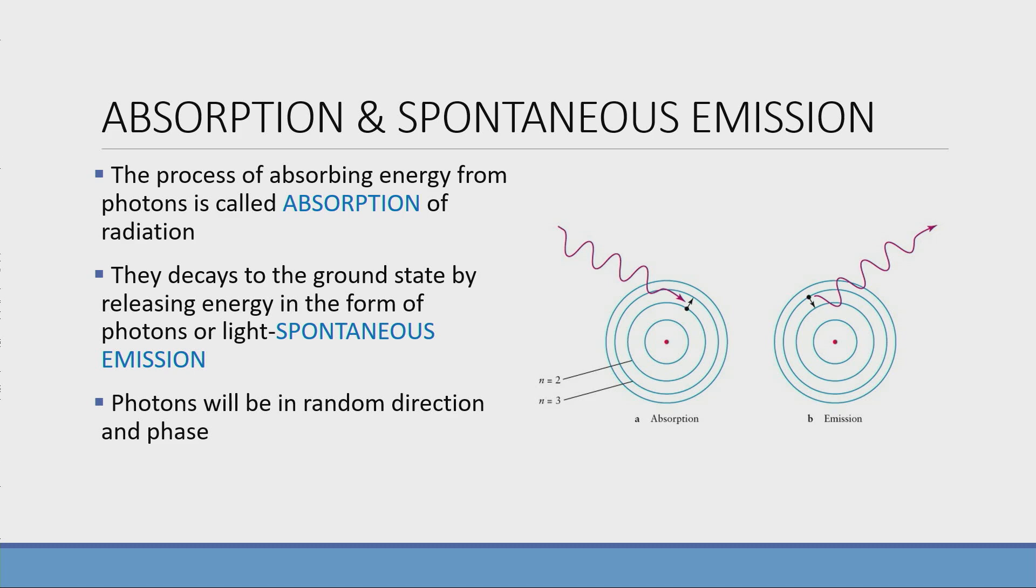Atoms have a central nucleus surrounded by electrons in various energy levels. When an electron from the ground state absorbs energy and moves to the higher state, it is known as absorption.